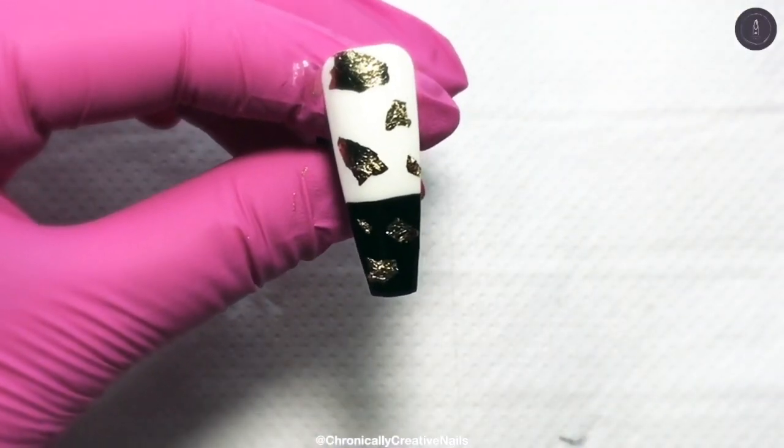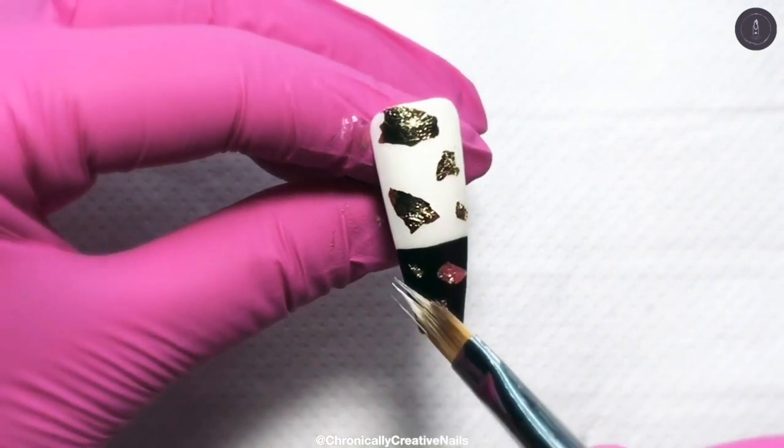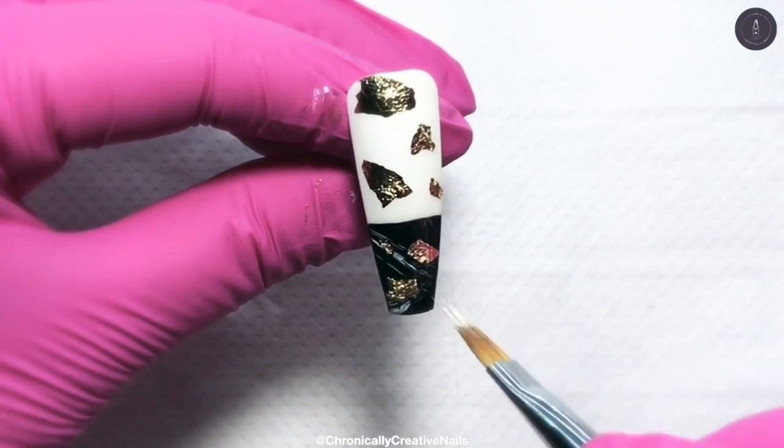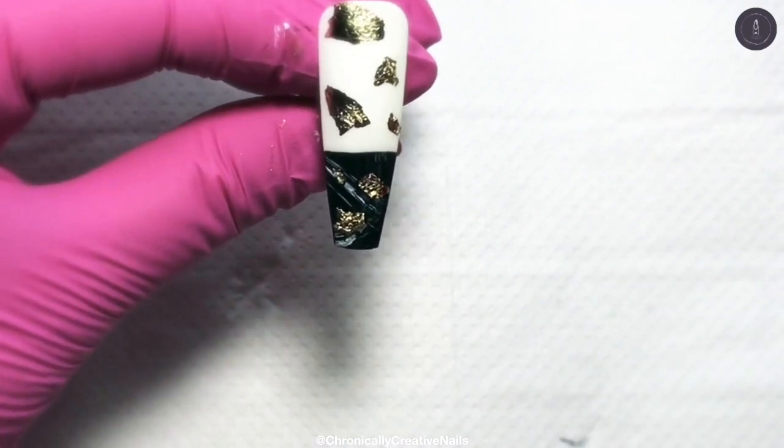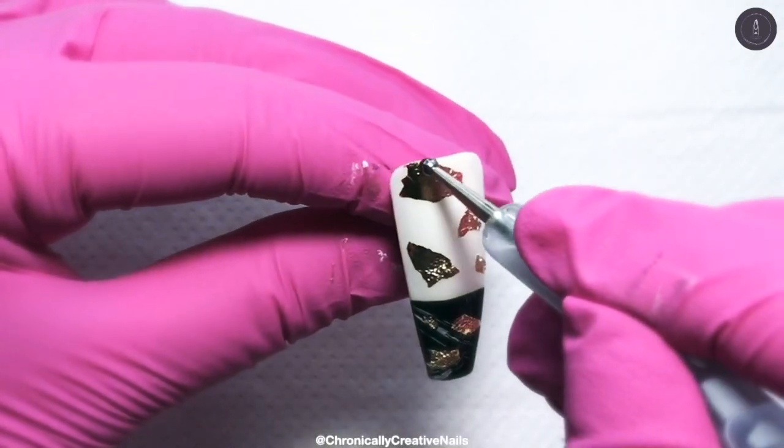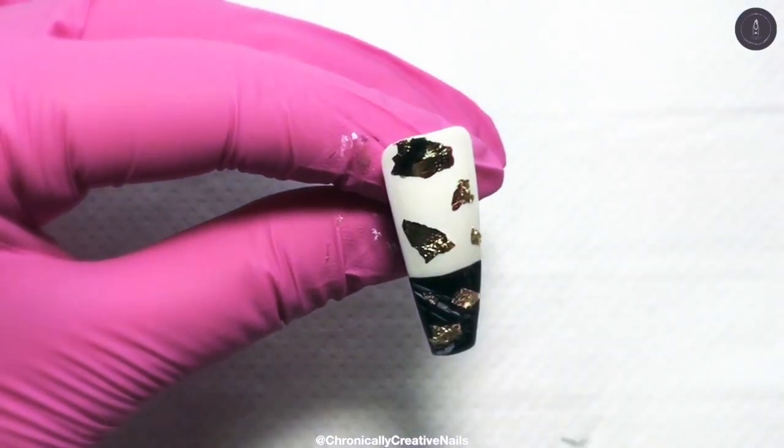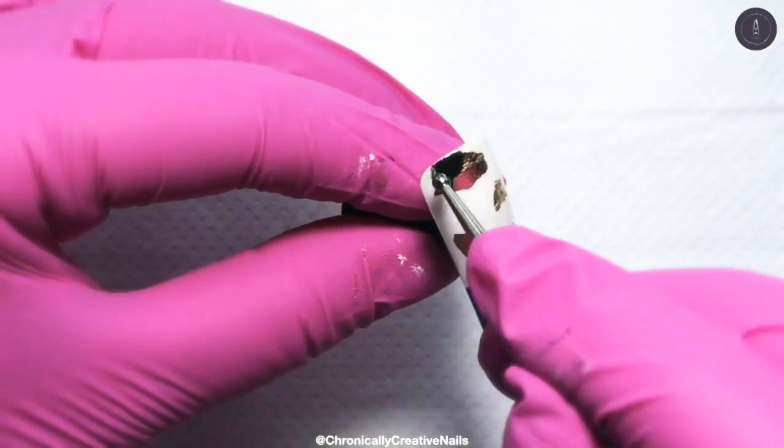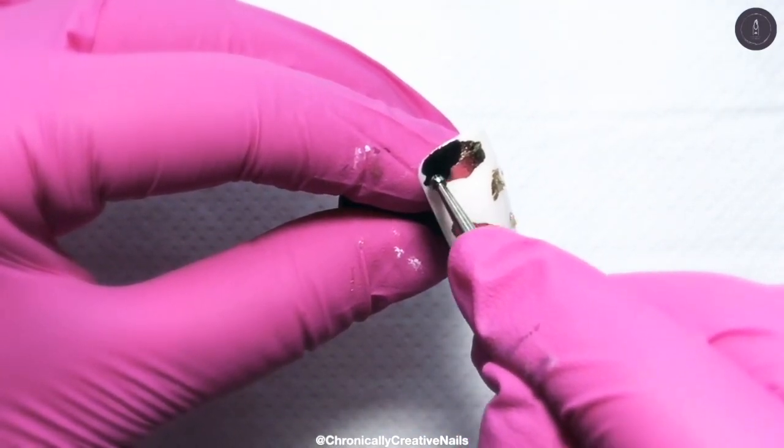There we go, so that's us done with that and now I'm going to do some brushstrokes again. And now we're going to make our cow print again and I thought that bit of gold was a bit big so I'm just going to cover some of that up with the black.